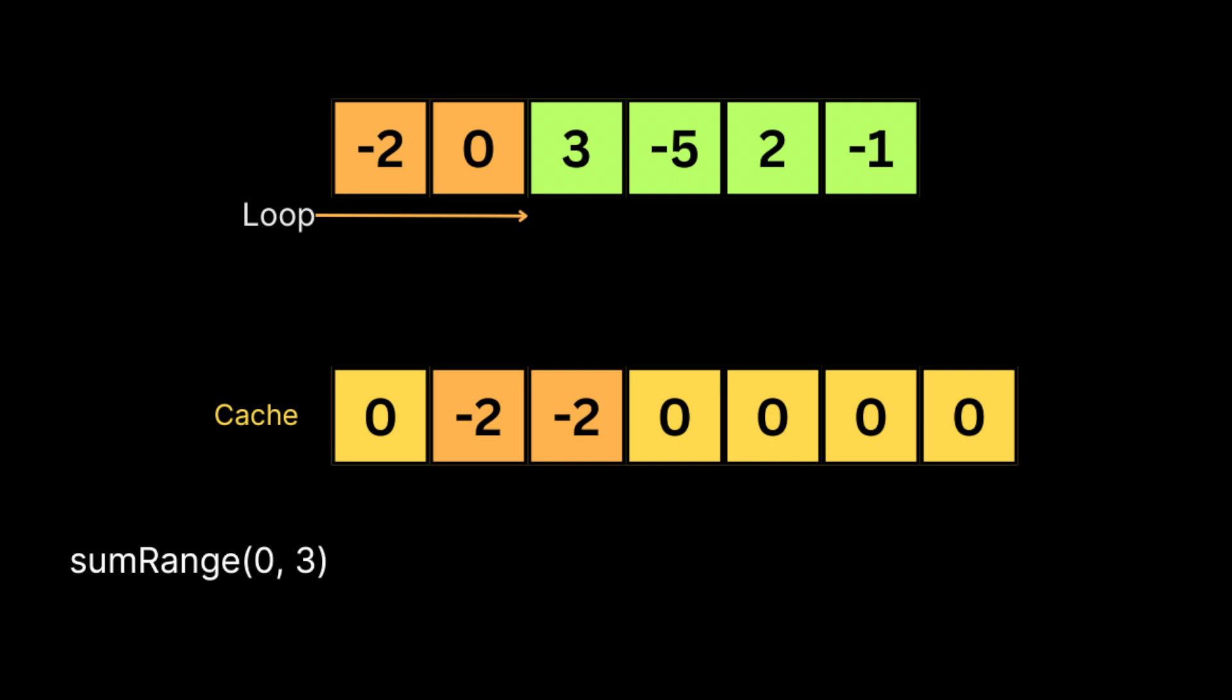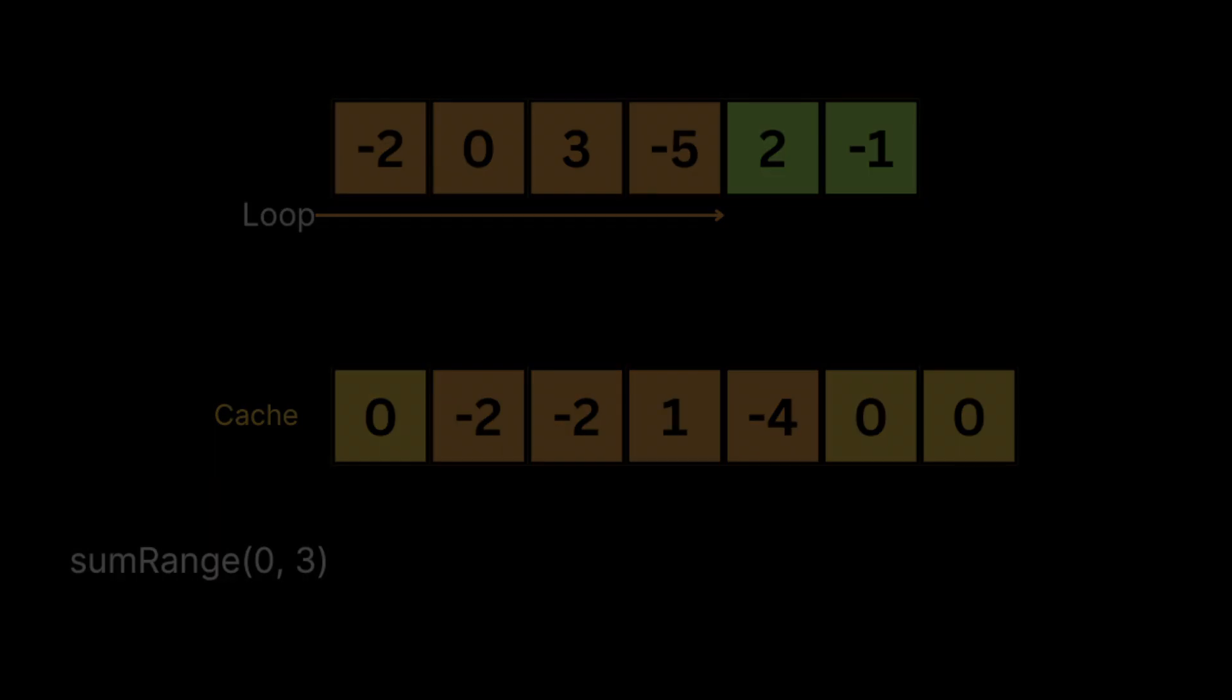the previous element in the cache and store the result in the current element. For example, when we reach index 2 (which has number 3), we add it to the previous sum in the cache and store it. We keep repeating this process until we reach the end of the array nums. At the end,